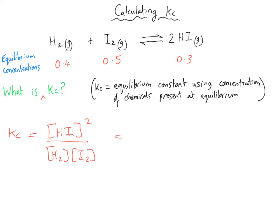Once we have our Kc expression — remembering the square brackets — we literally plug in the values given. For the hydrogen iodide equilibrium: [HI] is 0.3 and we square it because it's squared in the expression; [H₂] is 0.4 and [I₂] is 0.5. Then we calculate our value for Kc, and we need to think about units.